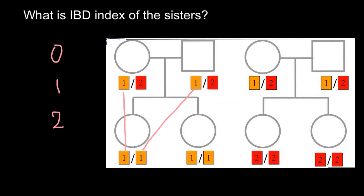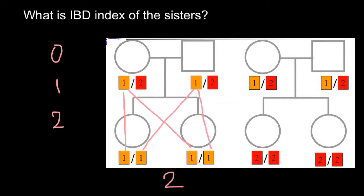We have 46 chromosomes organized in 23 pairs — one chromosome in each pair is inherited from the mother and the other from the father. These are called homologous chromosomes. So the only possible variant to get this genotype is that one allele is inherited from the mother and one from the father. The same is true for the sister. Therefore, the IBD index here would be 2, because both alleles are the same in both people at the same locus.